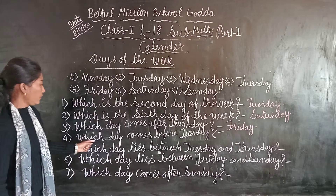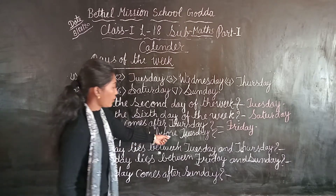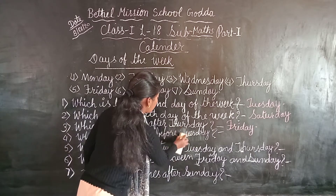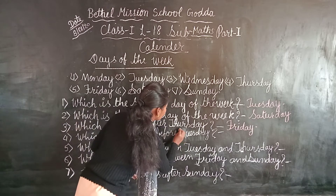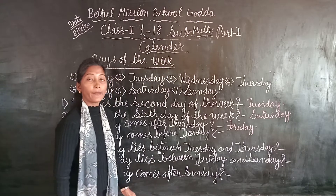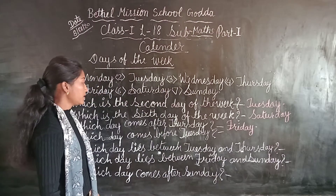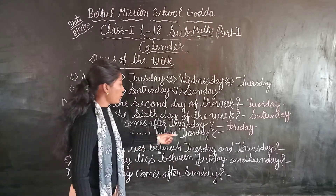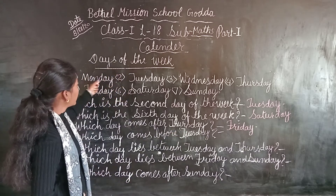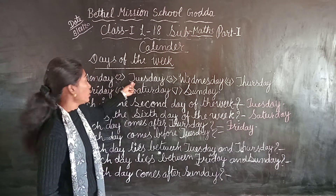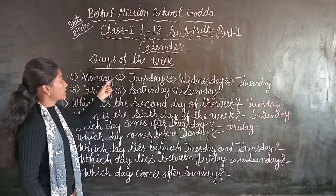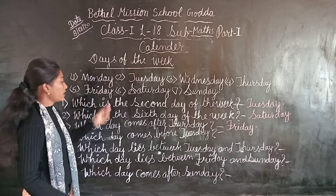Next question: which day comes before Tuesday? Before means Ke Pehle. Which day comes before Tuesday? First Monday, then Tuesday. So Monday comes before Tuesday. We will write here Monday.